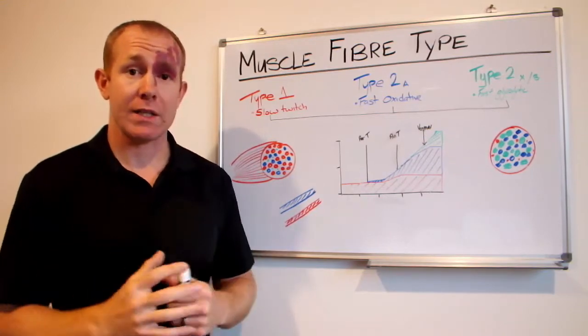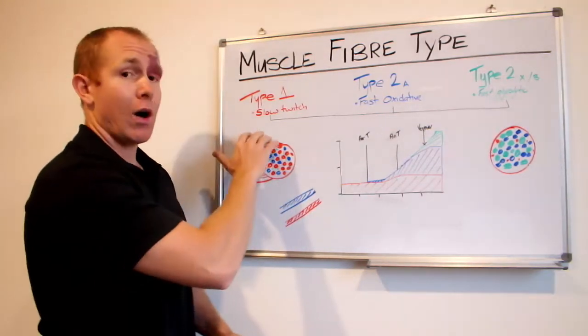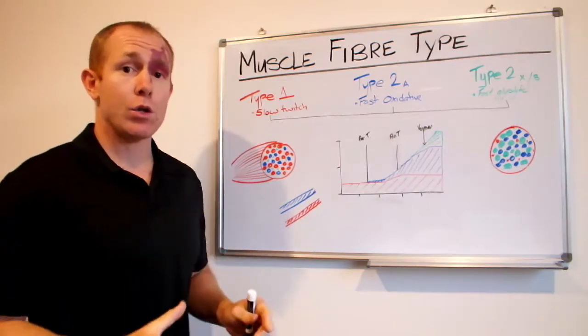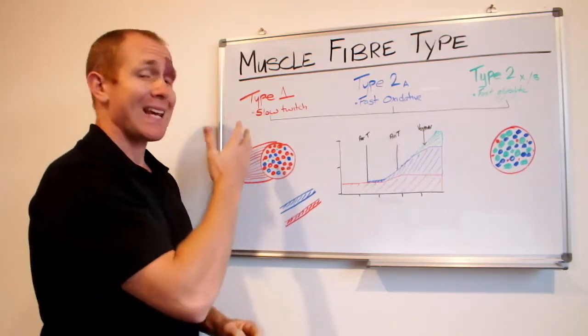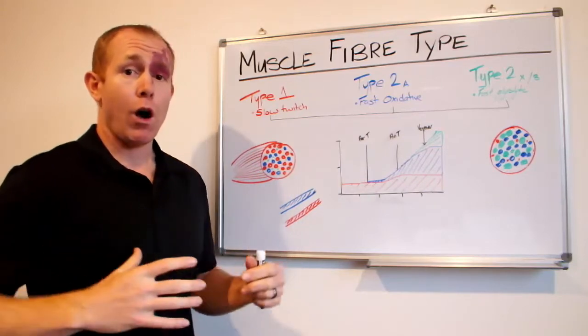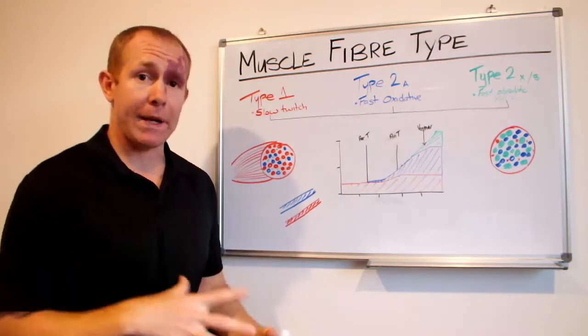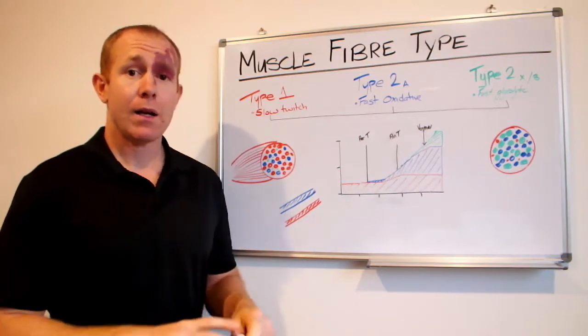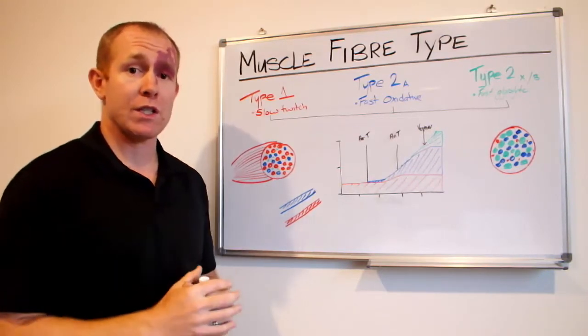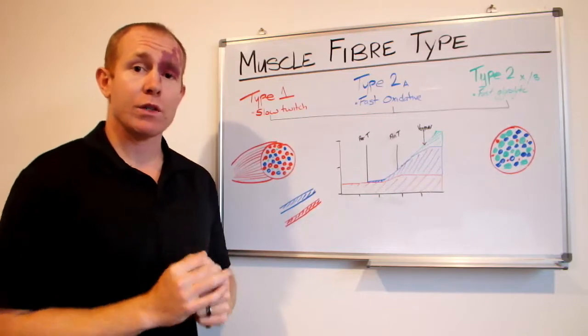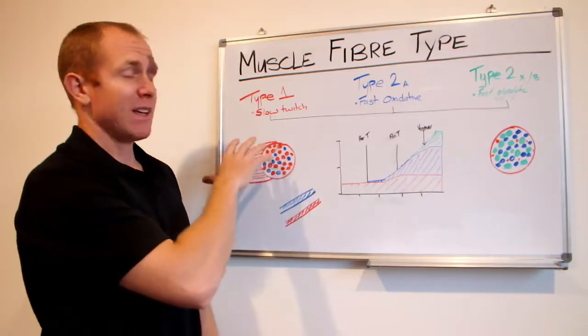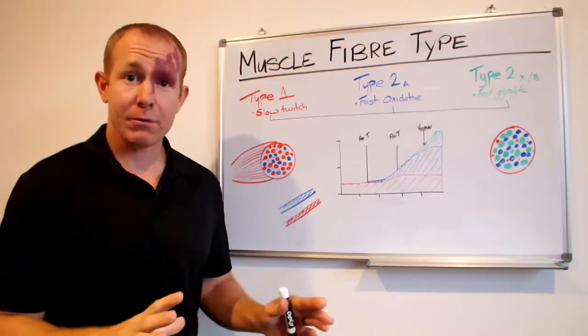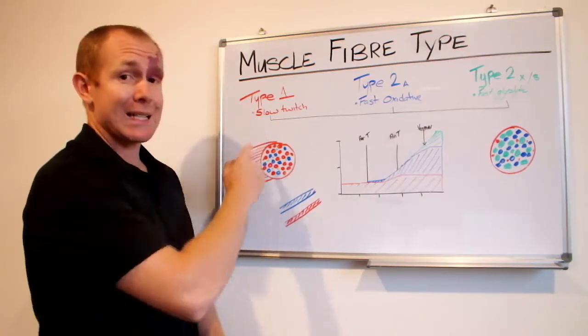We've got a Type 1 muscle fiber which are quite small and these are our slow twitch muscle fibers. These here are full of mitochondria, they've got a big blood supply to them and they're actually quite red in color because of myoglobin, which is a little protein that holds on to the oxygen in the cell. This can be thought of as your red meat, your steak, very red because it's largely made up of Type 1 muscle fibers.